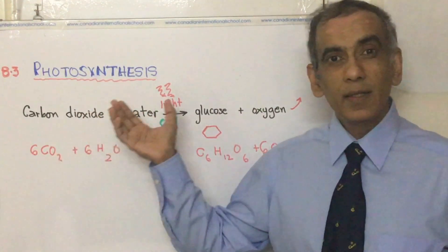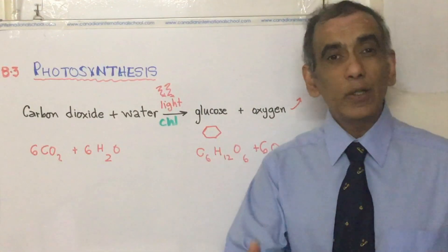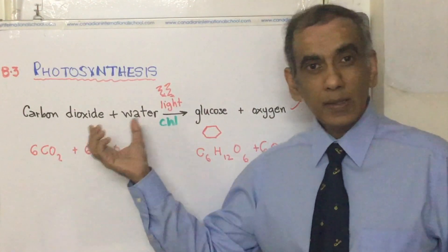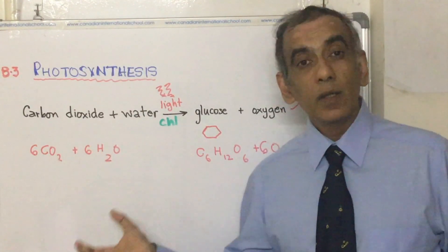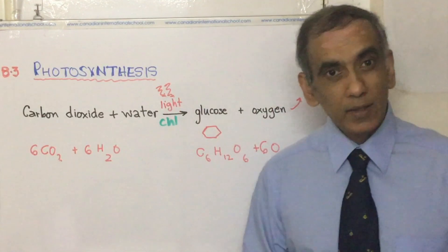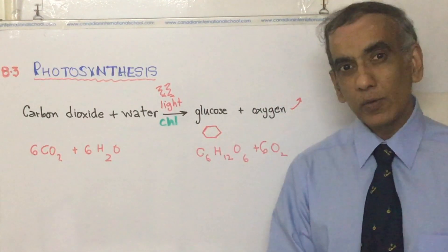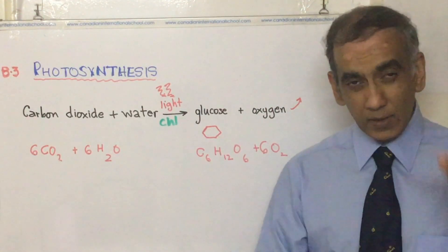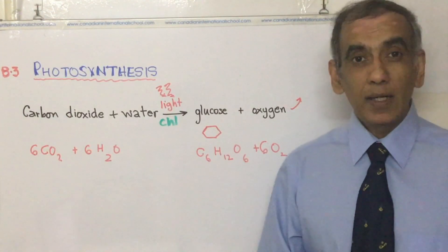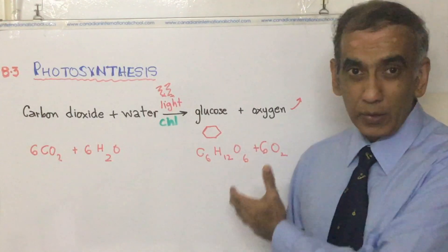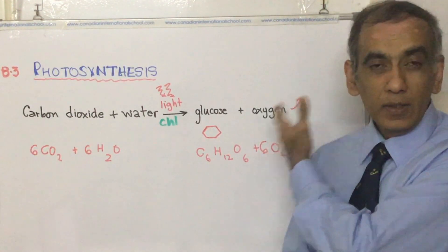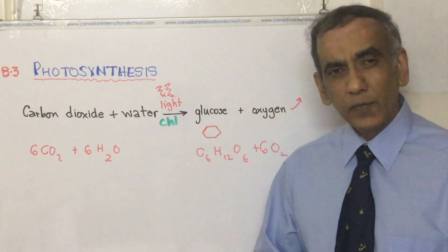Photo meaning light, synthesis referring to the manufacture or building up of something. Using carbon dioxide from the air, water from the soil, and sunlight energy, harnessing all those raw materials inside the leaf, specifically in the chloroplast, green plants are able to manufacture glucose and release oxygen, the waste product of photosynthesis.